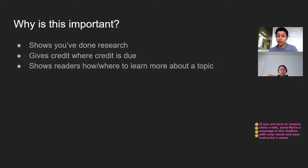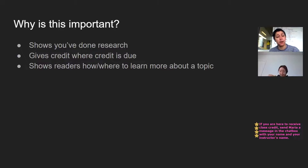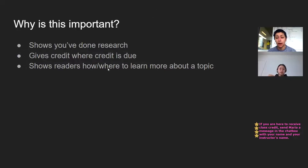Citations also give credit where credit is due to avoid plagiarism, which is just an ethical no-no. We don't want to pass off anybody's work as our own. We want to push ourselves to come up with creative original analyses. And we also want to make sure that when referencing another piece of work, we use that citation because it shows readers how and where they can learn more about a certain topic.